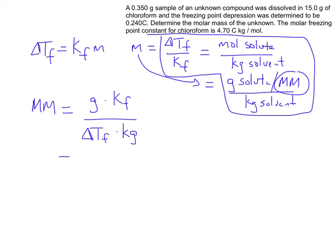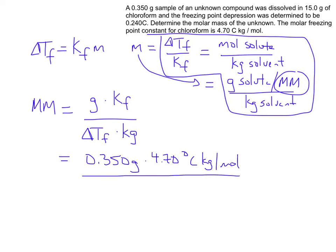Now I'm going to plug in the values. The mass of the unknown was 0.350 grams, multiplied by Kf which is 4.70 degrees Celsius times kilograms divided by moles, and all of that is divided by the change in the freezing point, which was 0.240 degrees Celsius, times the kilograms of the solvent, which is 0.0150 kilograms.